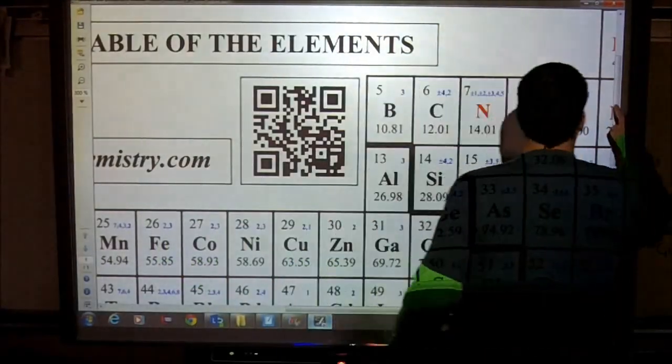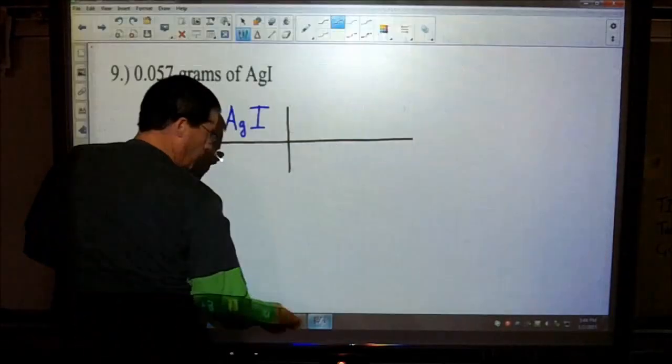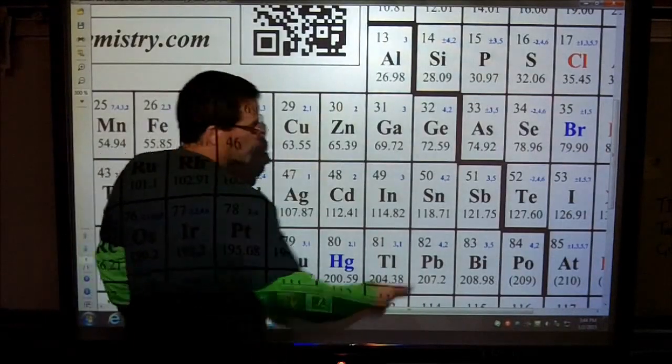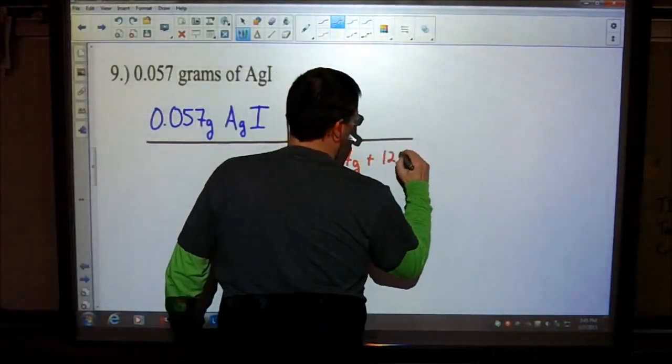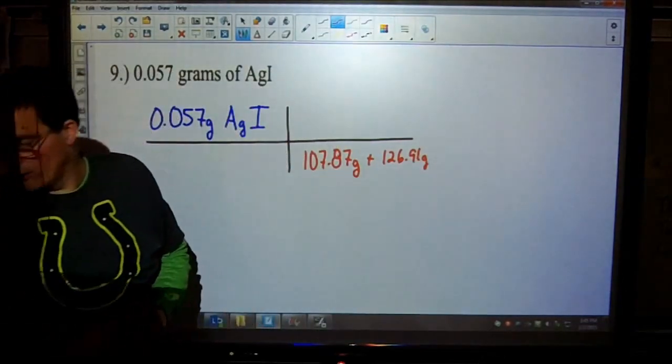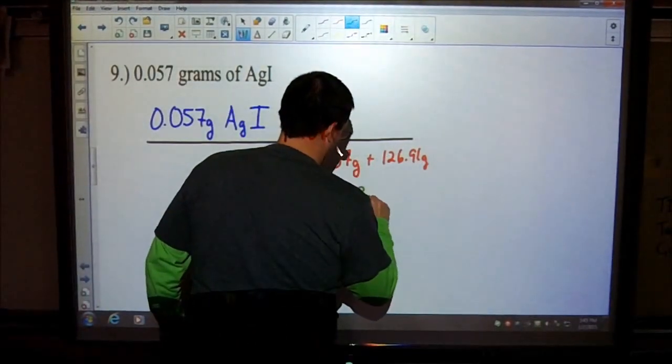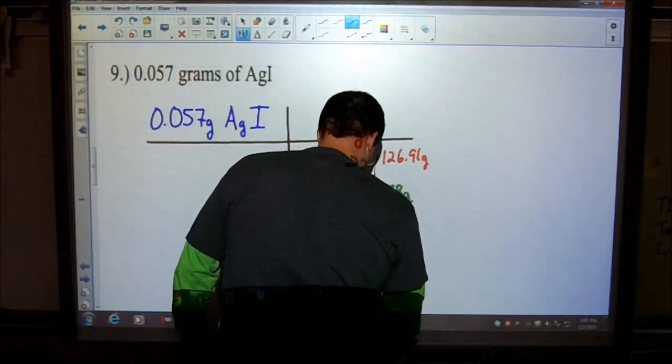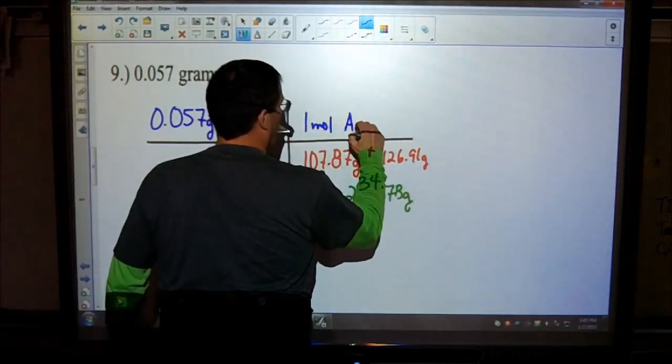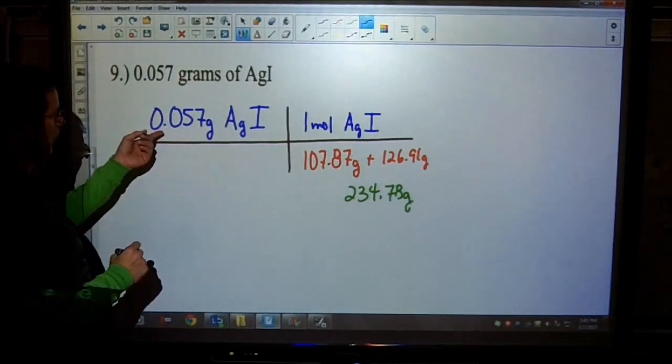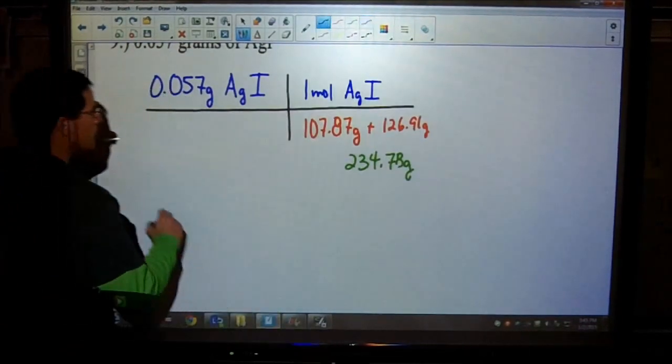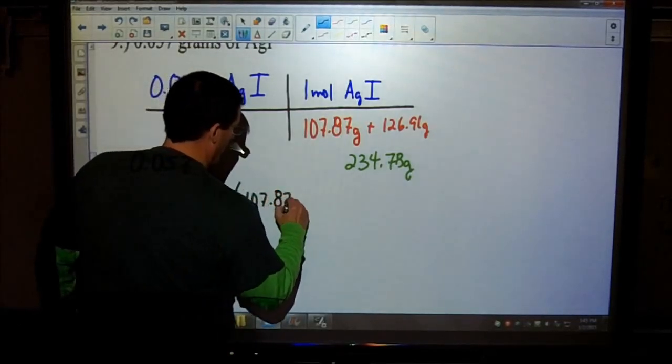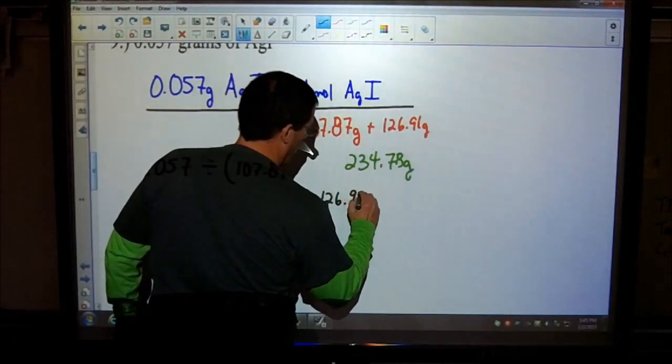Don't find out how many kilograms and then convert it back to grams to find moles. That's way too much work. We're going to move our grams diagonal. So let's find out what the molar mass for that is. Silver is 107.87, and iodine is 126.91 grams per mole. When we add those guys up, we get 234.78 grams.